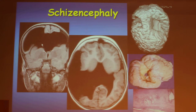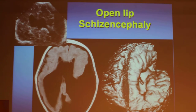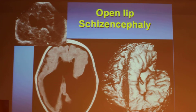In this case it's an open lip, both sides, larger on the right side, smaller on the left. On pathology, we see that it's outlined with gray matter on both sides of the cleft. It can also be seen on ultrasound imaging — here, a cleft leading from the ventricle to a large open-lip schizencephaly.